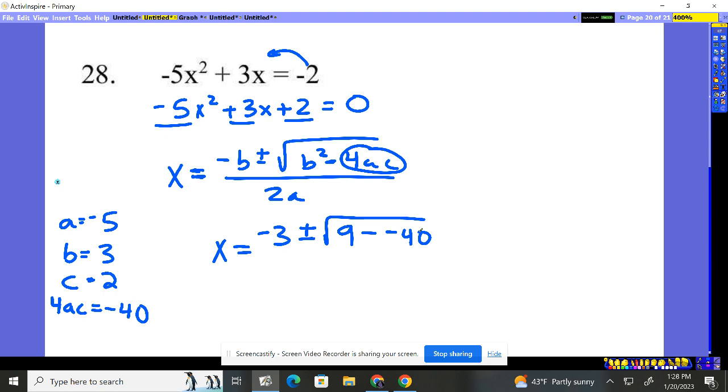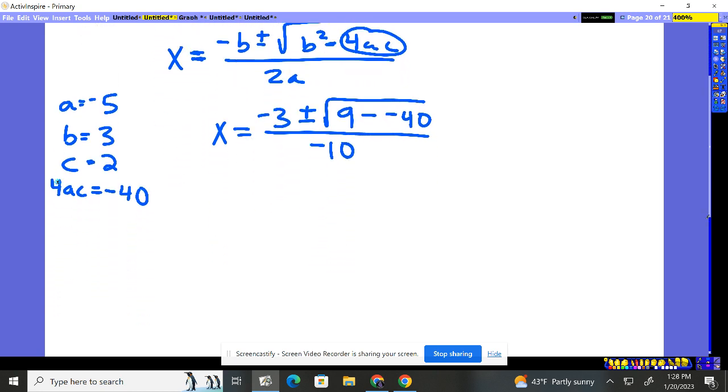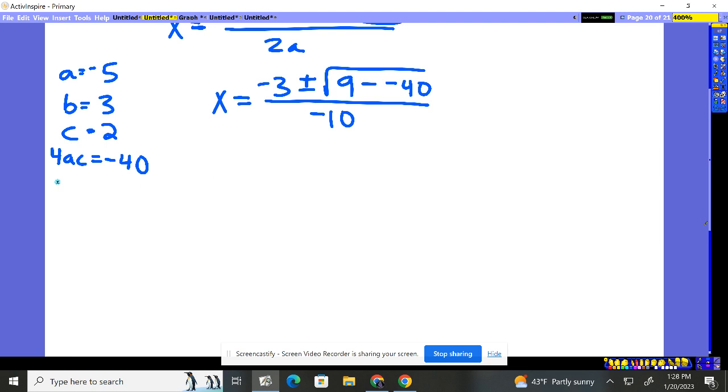Just double checking a thing here. Okay, because this is going to come out real pretty. All over 2 times negative 5, negative 10. Now, what happens when we subtract a negative here minus a negative 40? That changes to plus. So we end up negative 3 plus or minus the square root of 49 over negative 10.